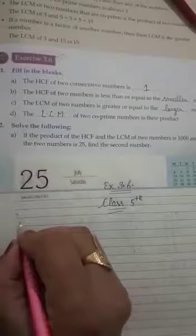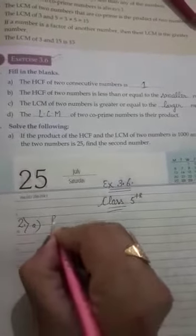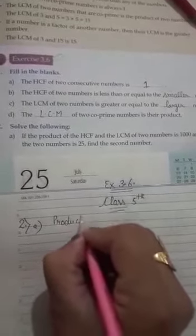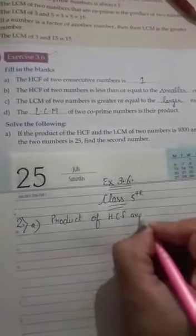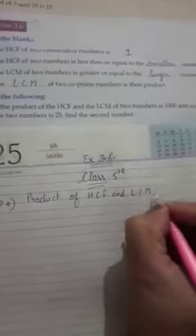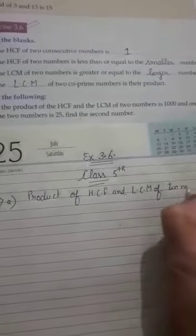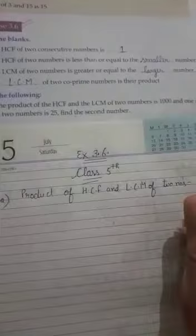Firstly, which one given that, write product of HCF and LCM of two numbers is equal to 1000.